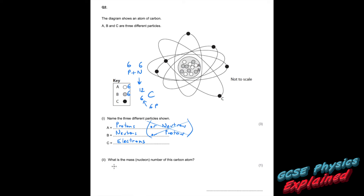Part two: what is the mass or nucleon number of this carbon atom? Well, if you didn't know, all you had to do was count how many particles are in the nucleus. We've already counted them as 12.